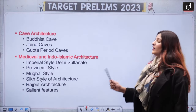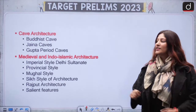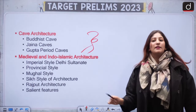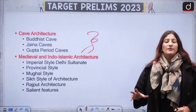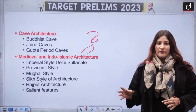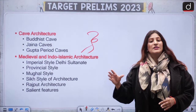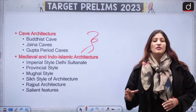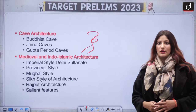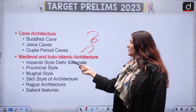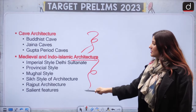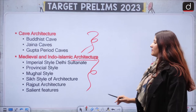Apart from that, we have Cave Architecture — Buddhist, Jain, and Gupta period. Especially remember the location, the caves, in whose reign those caves were sanctioned, and to which sect. In Medieval and Indo-Islamic Architecture — very important — we have the Provincial style and Imperial style of the Delhi Sultanate.